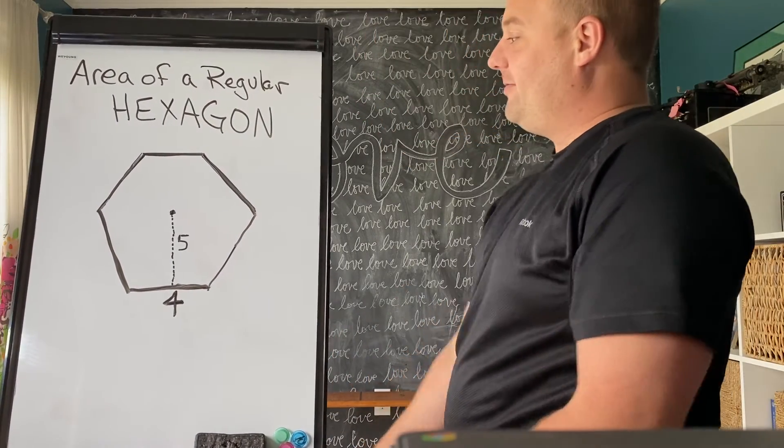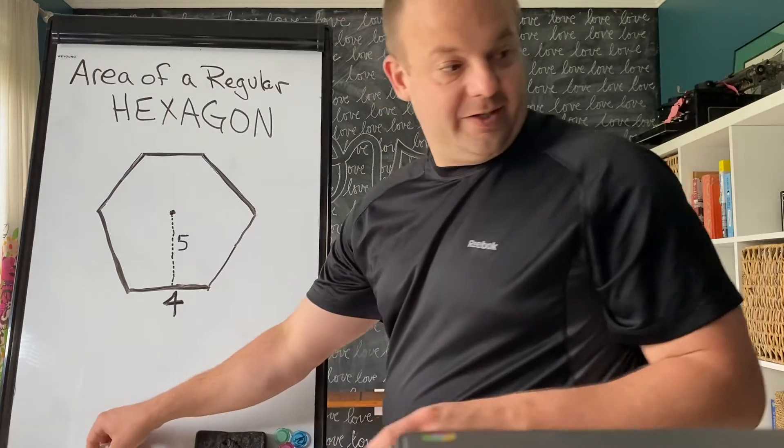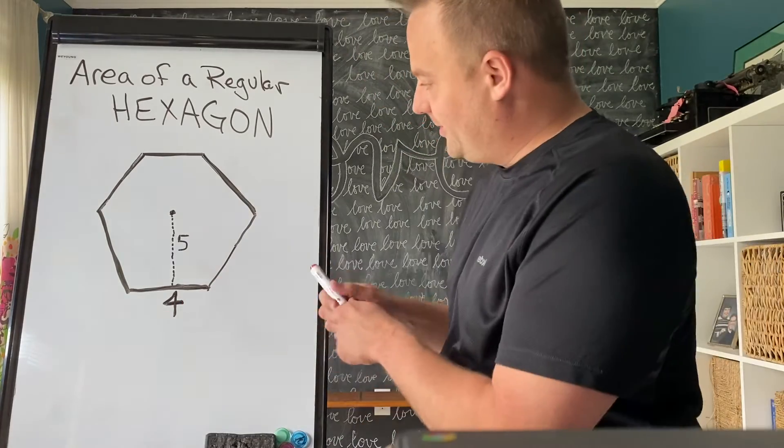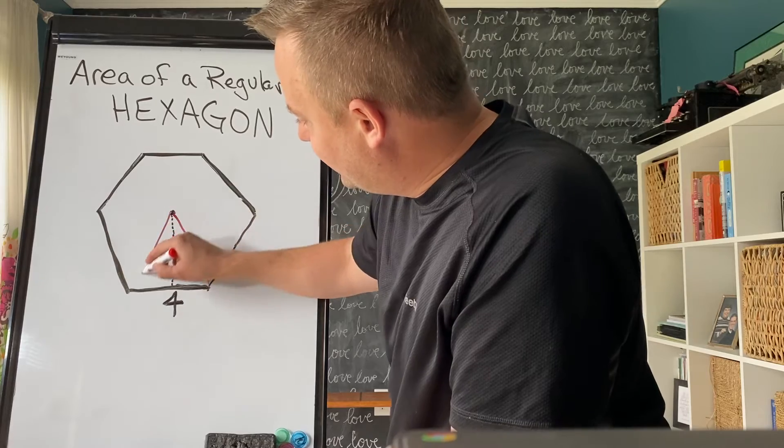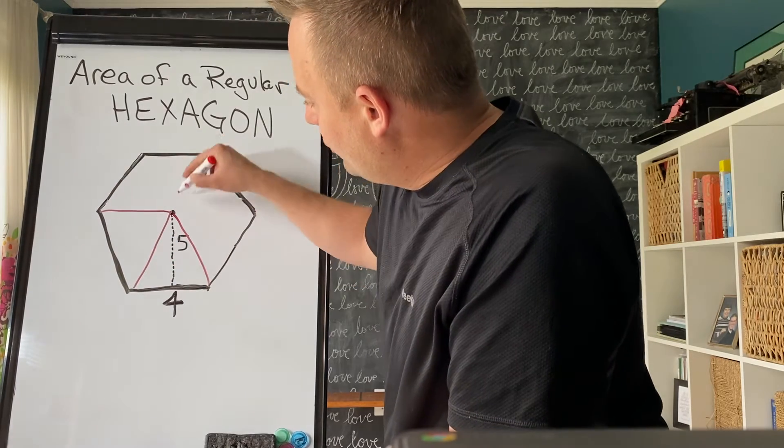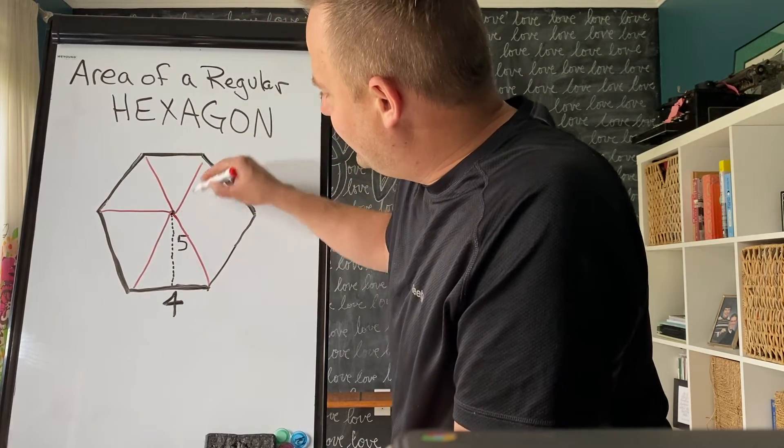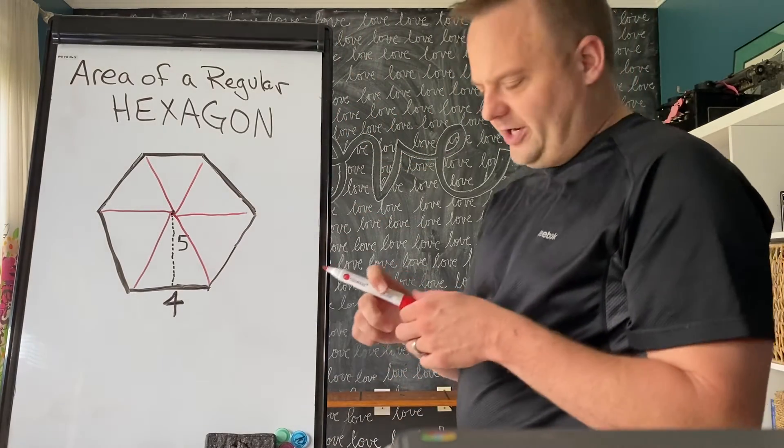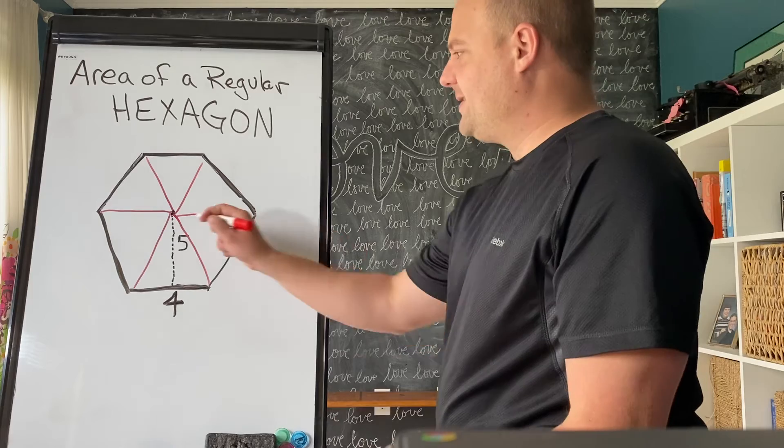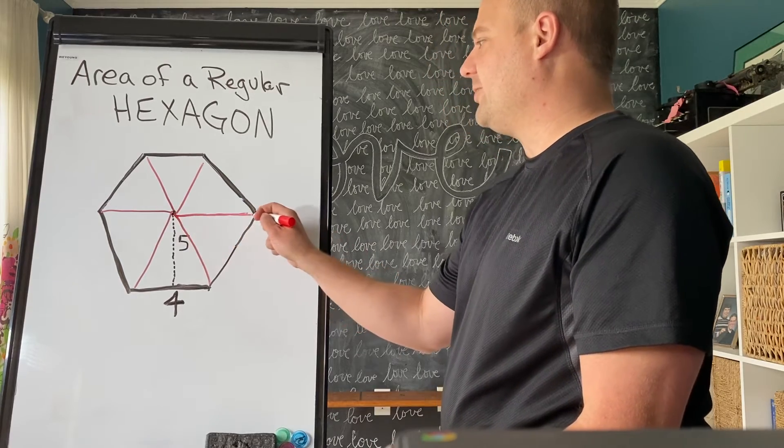And now, watch this. I'm going to get a different color and show you the 6 congruent triangles. Now, is mine to scale? No, mine isn't to scale because I just freehand drew this. But you can see six congruent triangles right here.